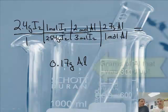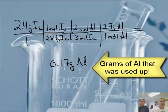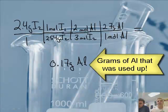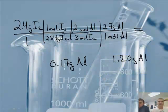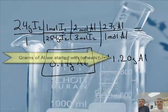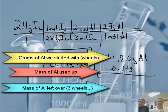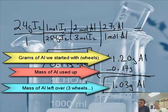So 0.17 grams of Al is how much aluminum it took to react with the 2.4 grams of iodine. We started with 1.20 grams of Al and used up 0.17 grams of it. Subtracting: 1.20 minus 0.17 equals 1.03 grams of Al left over — that's how much did not react. So most of the aluminum still remains; only a small amount was consumed.